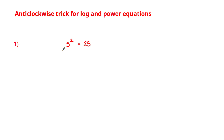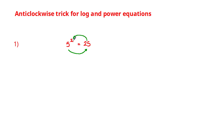Here we have an equation 5 squared is equal to 25. To use this trick, the first thing you have to do is recognize that the value being raised to a power is always seen as the base of the log, and we always start with the base. In this case the base is 5, so starting with 5 we go anti-clockwise to the next number which is 25, and then we keep going anti-clockwise to the next number which is 2.